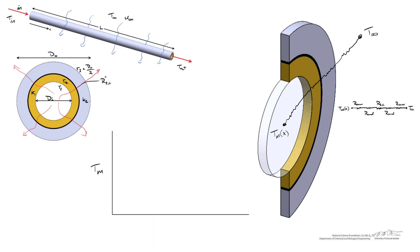The ultimate goal is to calculate the mean temperature as a function of x, where x equals 0 is at the entrance of the pipe and x equals L is at the exit. We know the temperature equals the inlet temperature at x equals 0, and the question is what the temperature profile looks like as x increases. We will not determine the radial temperature gradient from r equals 0 to r equals r1 — we will simply compute an average temperature.